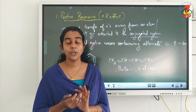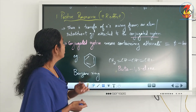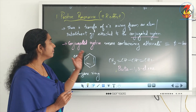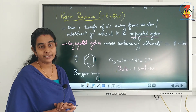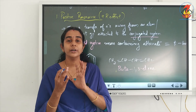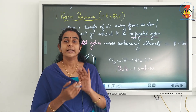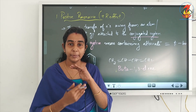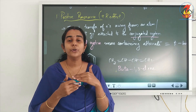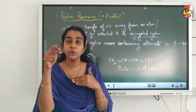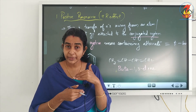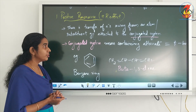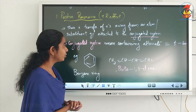In positive resonance or plus R effect, it is a transfer of electrons away from the atom or group of atoms attached to the conjugated system. If a group is attached to a benzene ring, there will be transfer of electrons from that group towards the ring — an electron shift from the substituent to the benzene ring.